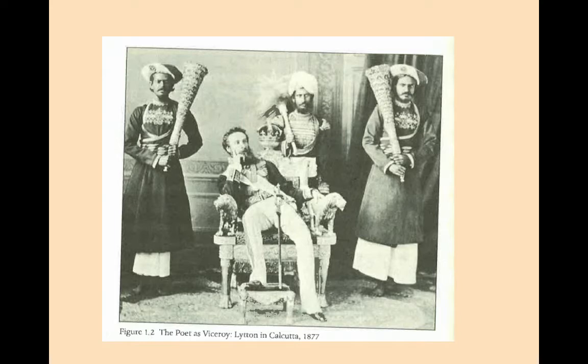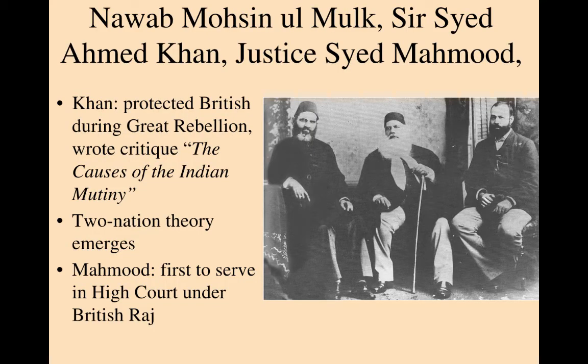Here is Viceroy Litton in 1877, flanked by some of his Indian guards who look very well dressed and were probably paid handsomely by the British government. He's sitting in Calcutta, which was the capital of the British Raj — the seat of government. That's going to be important when we look at the distributions of some goods later on. Here we can see that some of these Indian guards were quite complicit in supporting the British government.